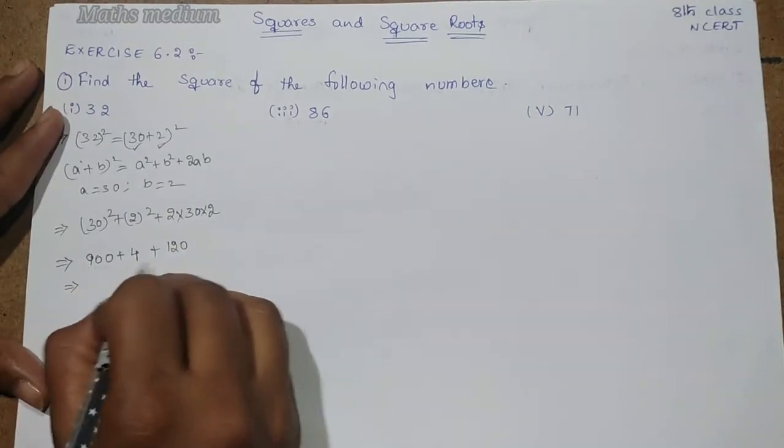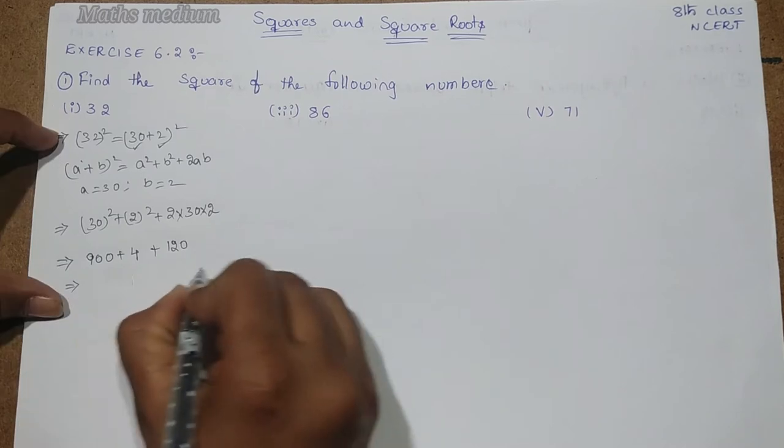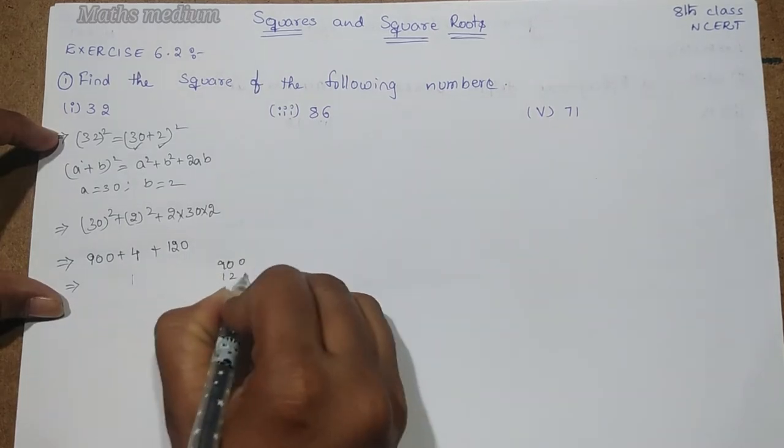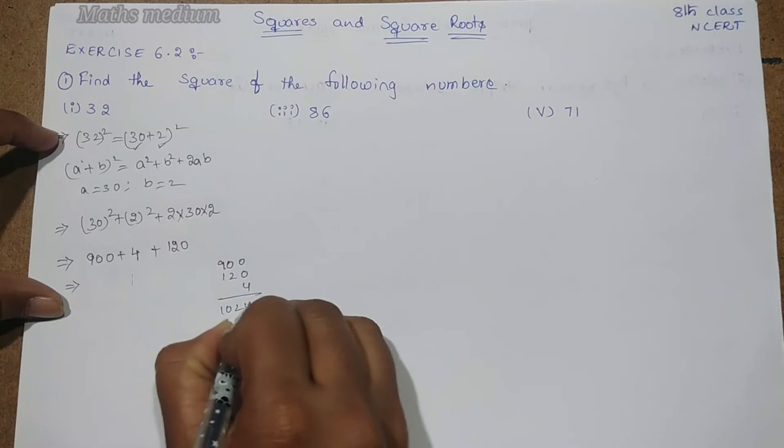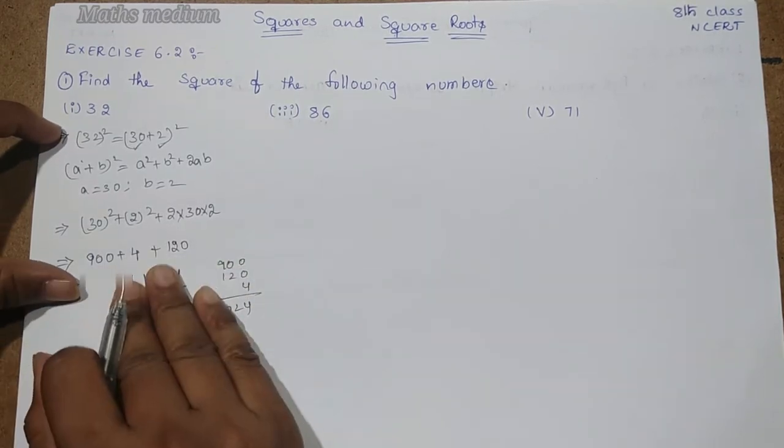Now, let's add 900 plus 120 plus 4. This equals 1024. 1024 is the answer for this question.